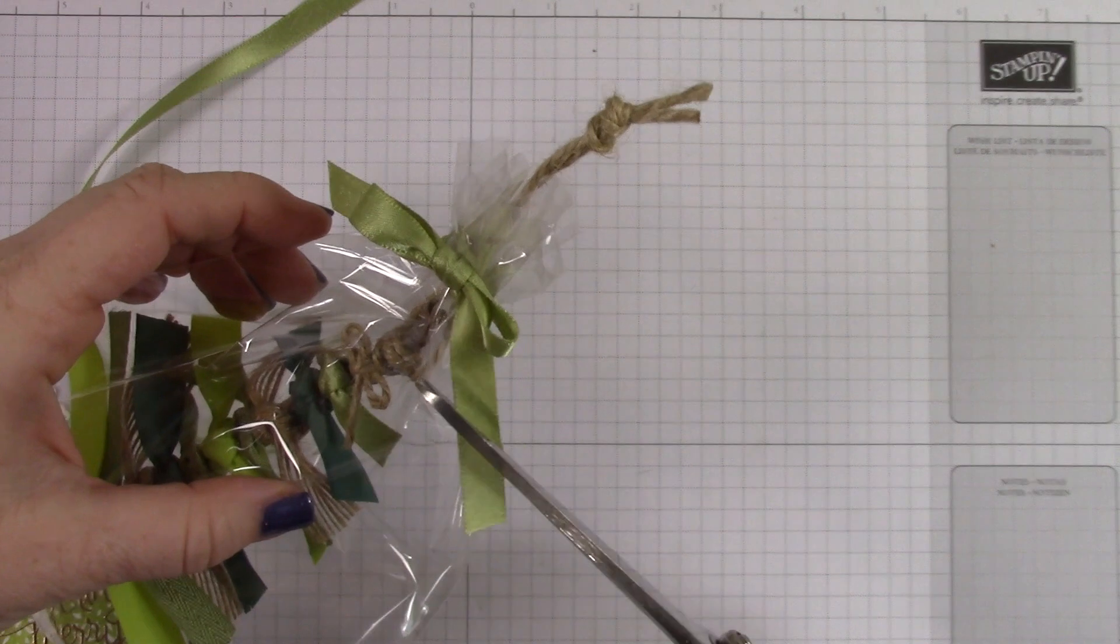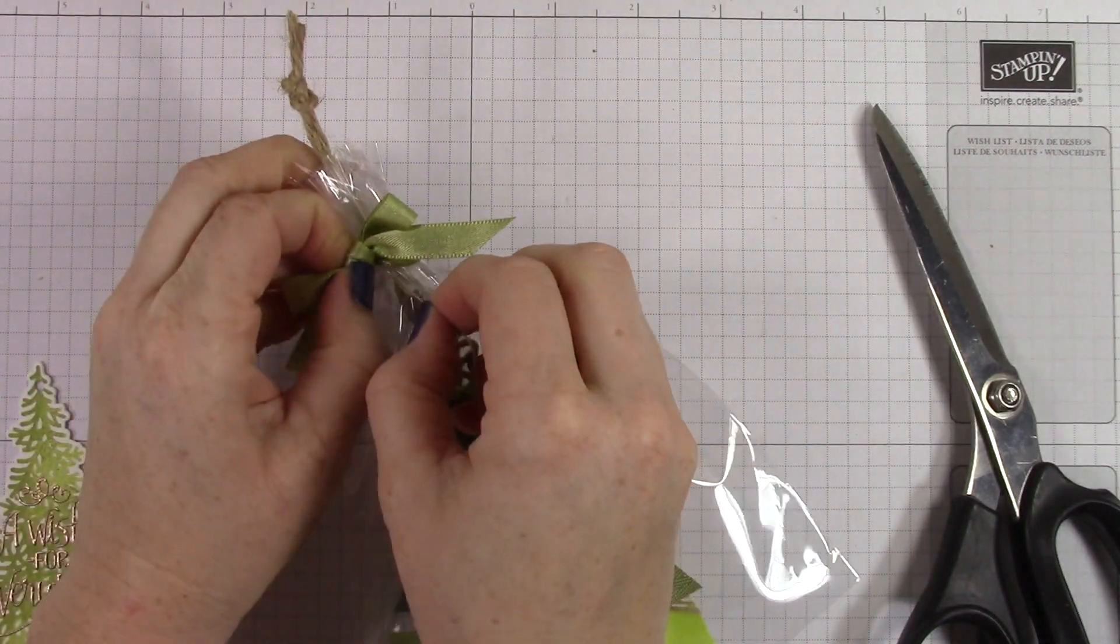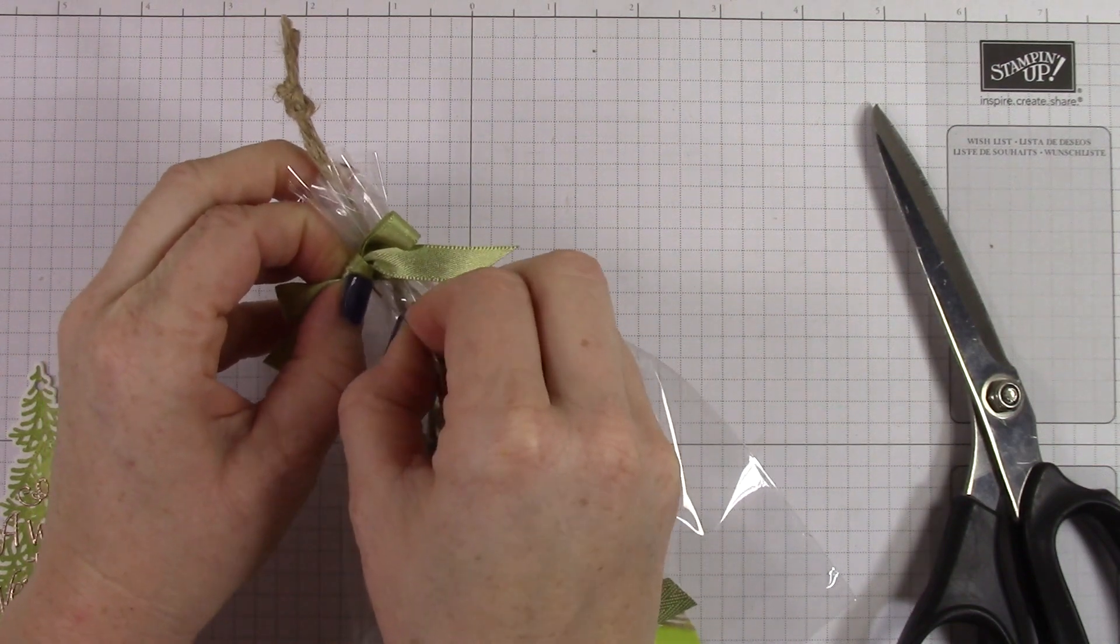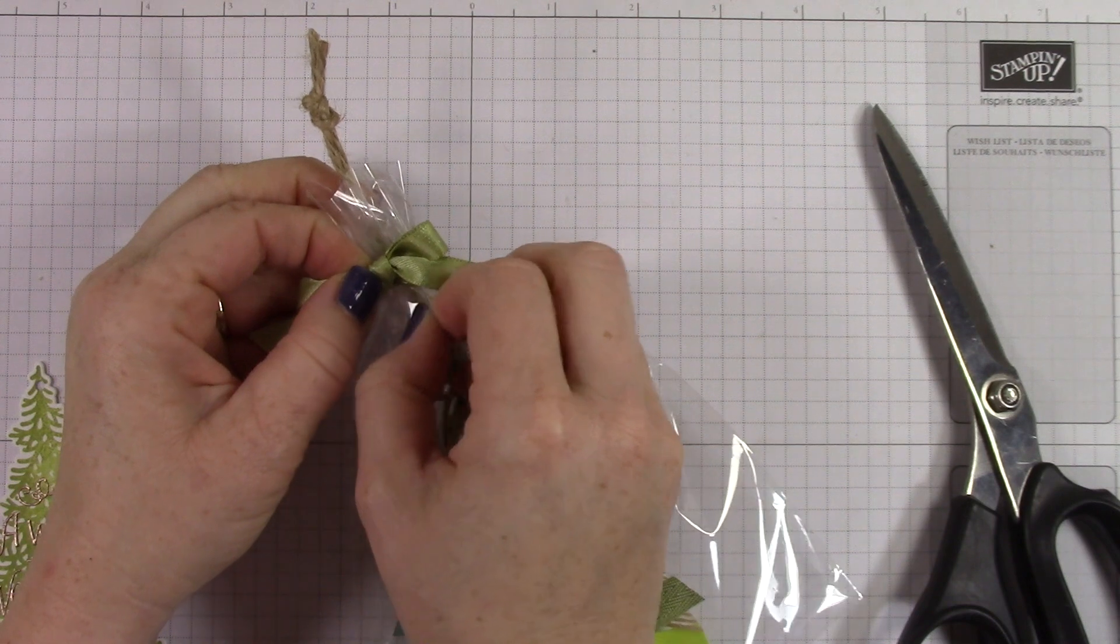So I just take the linen thread and I'm going to run it up underneath this piece of ribbon here. It's a little tricky to get going at first, but once you find a little spot there, it'll slide right through because it's up against that bag.